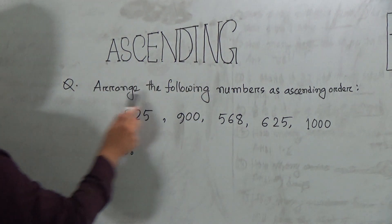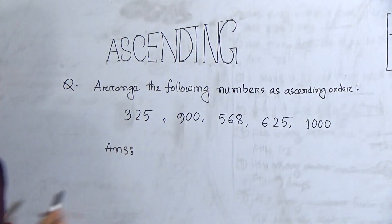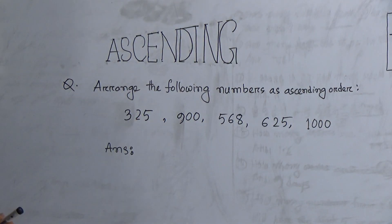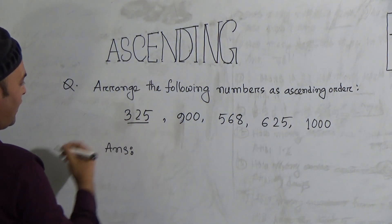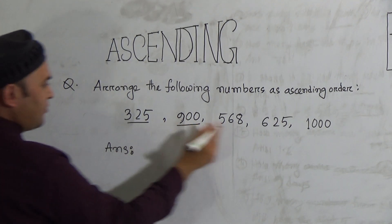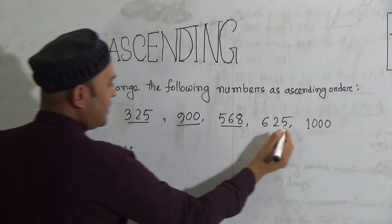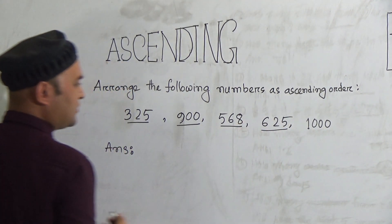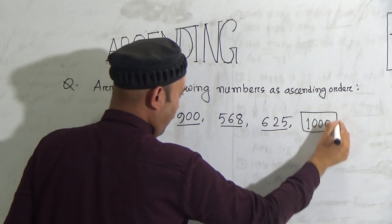Now the question is: arrange the following numbers in ascending order. Look, there are some numbers. This is 325, a three-digit number; 900, a three-digit number; 568, also a three-digit number; 625, a three-digit number; and 1000 is a four-digit number.